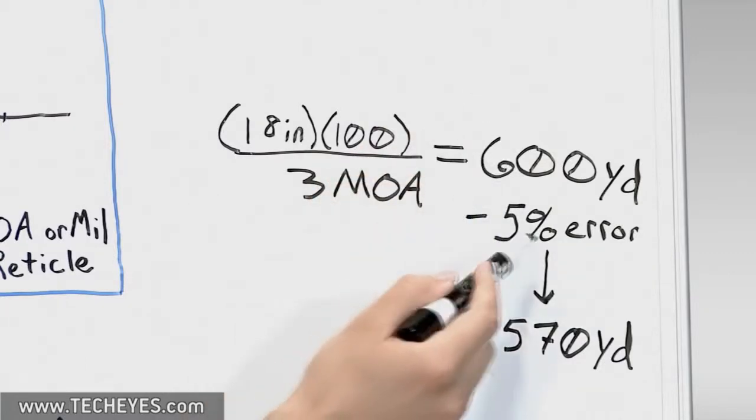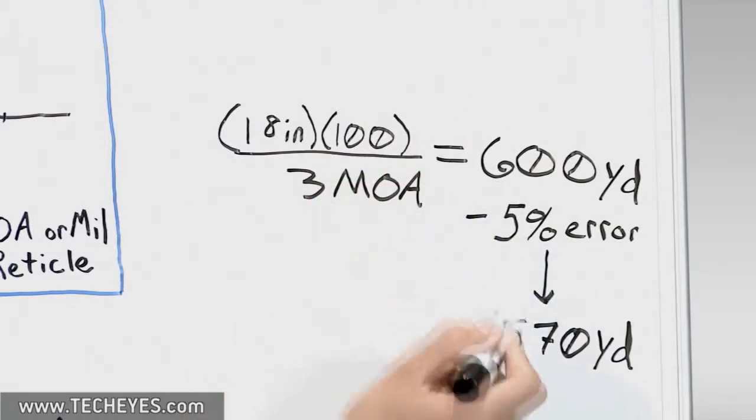But if we don't account for this 5% error, we wouldn't see that our target is actually 570 yards away. This is a significant difference to you as a shooter. If you're compensating for 600 instead of 570, it could cause you to shoot high.